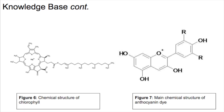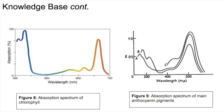Figure 6 shows the chemical structures for chlorophyll, and Figure 7 shows the main structure of anthocyanin pigments. These two chemicals are known substances that can be used in dye-sensitized solar cells as the light-absorbing dye. Figures 8 and 9 show the absorption spectra for both chlorophyll and the main anthocyanin pigments. Chlorophyll has absorption peaks at about 425 and 670 nanometers, while anthocyanin pigments have an absorption peak at about 500 nanometers. However, using multiple dyes with different absorption spectra would result in a dye able to absorb a greater range of colored photons.